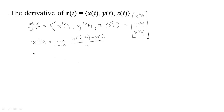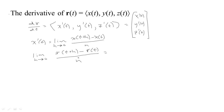That would be the same thing as taking the limit as H tends to zero of R of T plus H — that would be the whole vector — minus R of T, all over H. We're really saying that for each of the components, we take X of T plus H minus X of T and divide by H, and Y of T plus H minus Y of T divide by H, and so on. So we're really just taking the limit as H tends to zero.